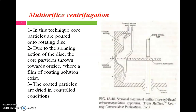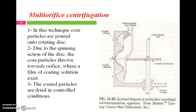The next method is multi-orifice centrifugation. The apparatus contains mainly a rotating drum which has three grooves — the upper and lower grooves hold the coating solution, and the central groove has a small opening called the orifice. This drum is continuously rotating, and at the axis of the drum there is a rotating disc.